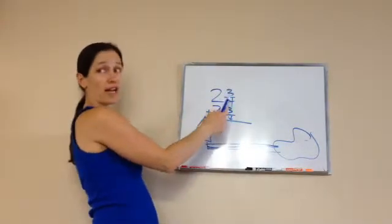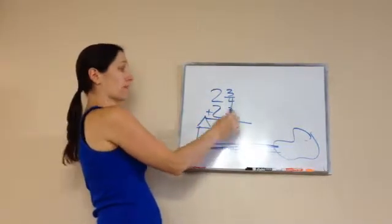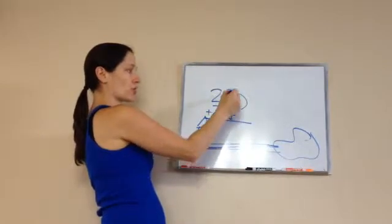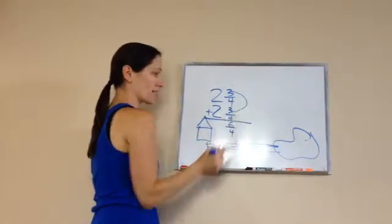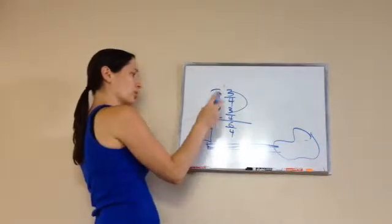I'm going to do the numerators. So, three plus three is six over four. Remember, these numbers stay the same. And then two plus two is four.